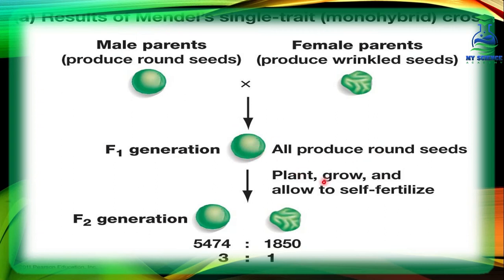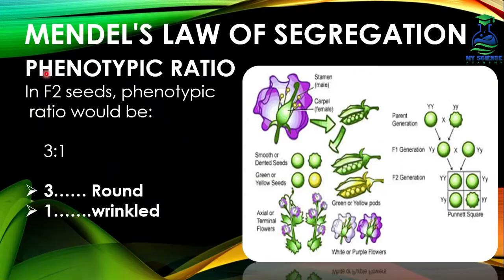Then Mendel planted F1 seeds and allowed the new plants to self-fertilize, meaning plants from the F1 generation were crossed with plants of the same generation. The resulting next generation offspring is called the F2, or second filial, generation. When Mendel statistically analyzed this, he got 5,474 round seed shape plants and 1,850 wrinkled seed shape plants, and they were in the ratio of 3 to 1.